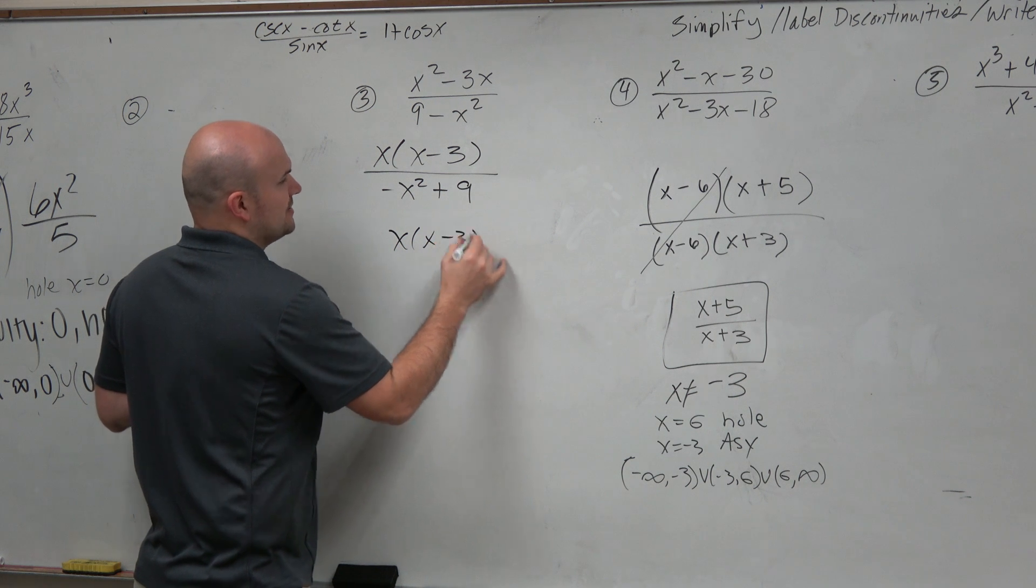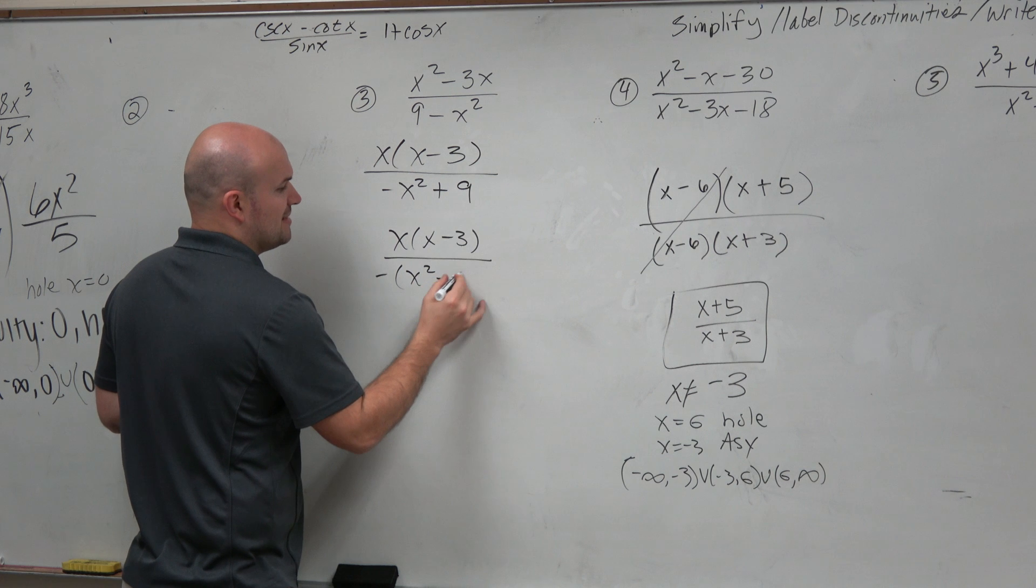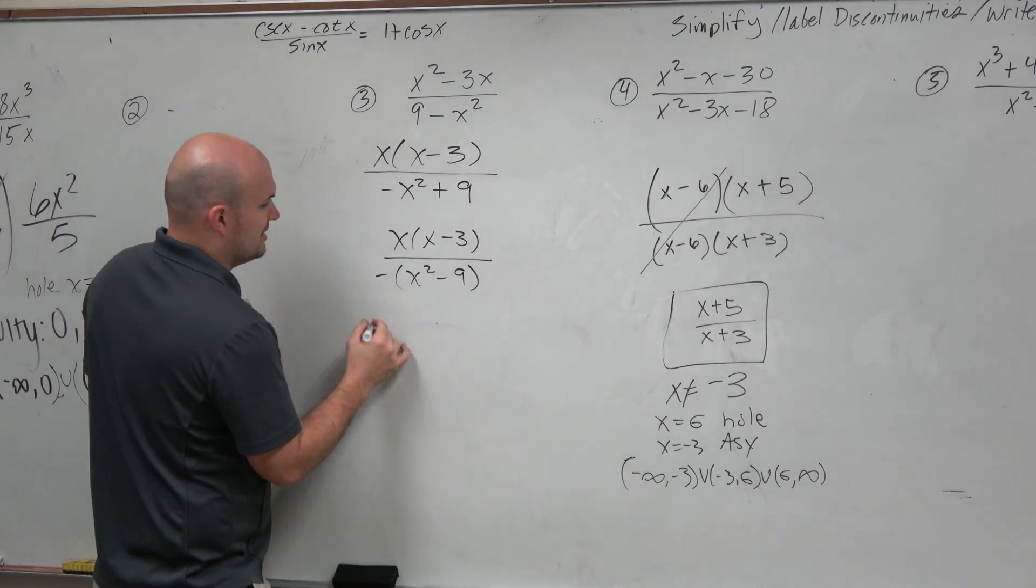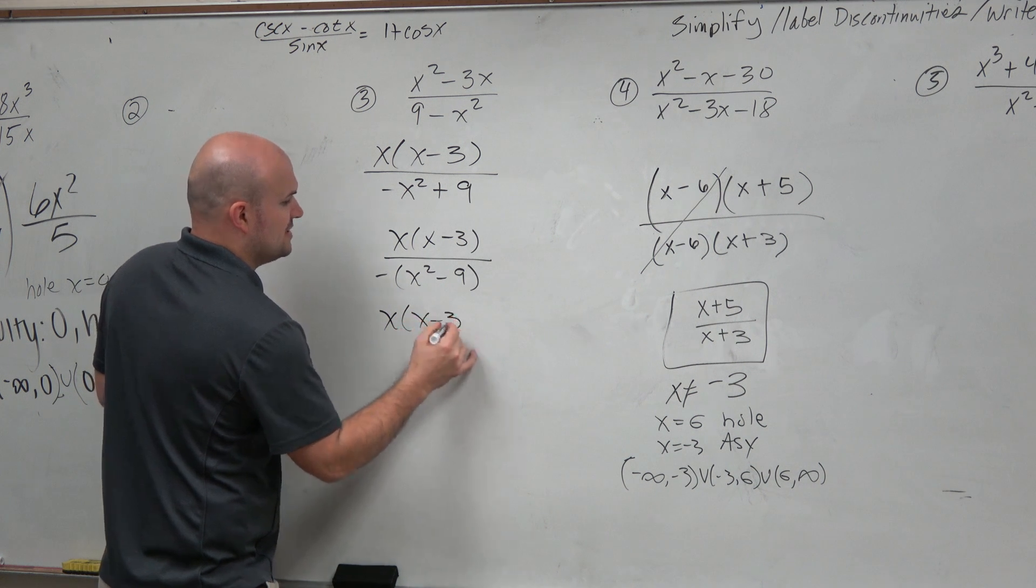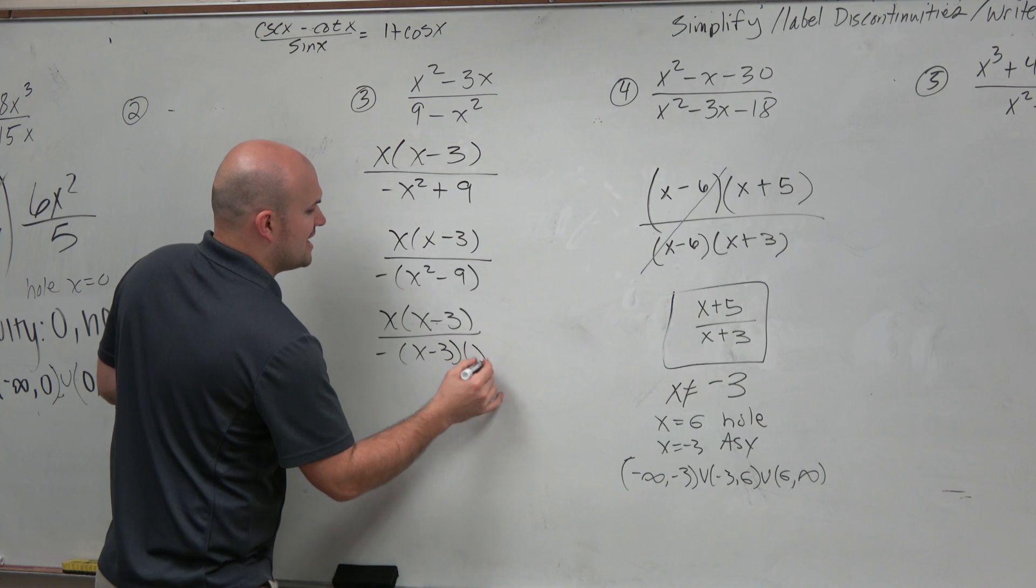I have x times x minus 3 all over negative times x squared minus 9. Now that's in a format you're much more familiar with, right? And now I can say x times x minus 3 all over negative times x minus 3 times x plus 3.